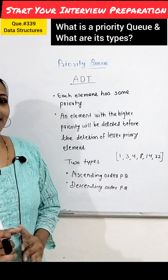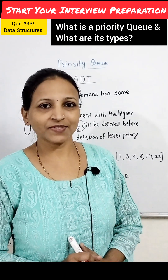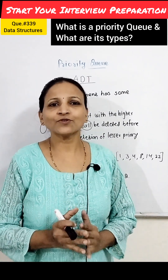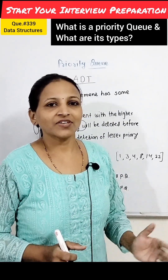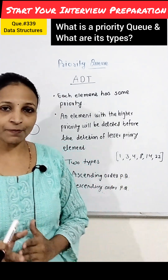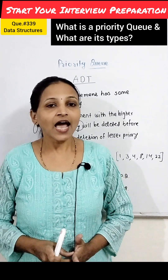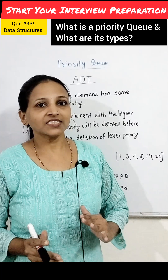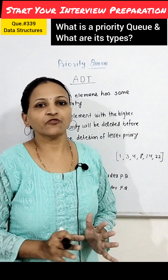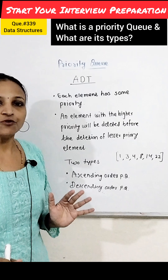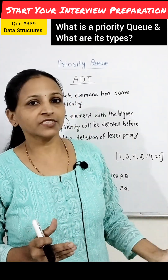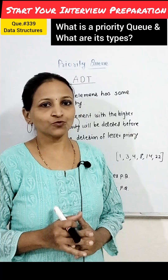What is a priority queue and what are its types? A priority queue is an abstract data type, just like a queue data structure, but each element has a priority associated with it. The element with higher priority will be removed first, before removing the lower priority element. If two elements have the same priority, then first in first out order will be considered for those elements.